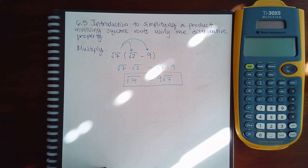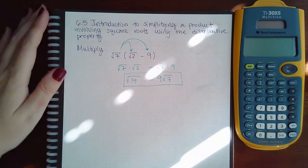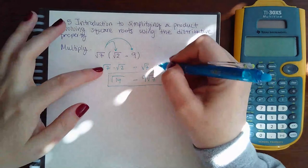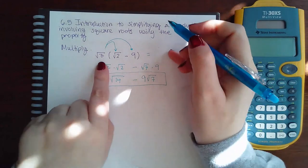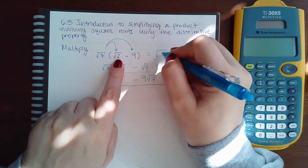Now this is the introduction so they're just wanting you to get in the habit of multiplying that over. Now I don't write this step down when I do the problem. I usually do this times this, inside times inside, so square root of 14.